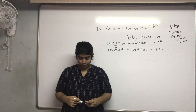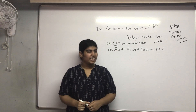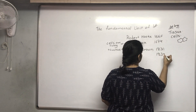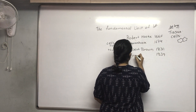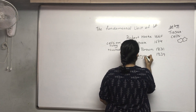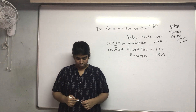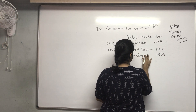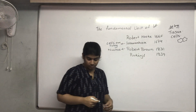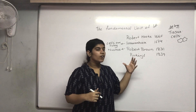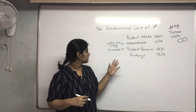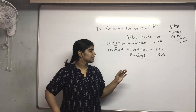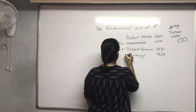After Robert Brown, in 1839, Purkinje found out that the living cells have fluid in them, and this fluid is known as the protoplasm or cytoplasm.